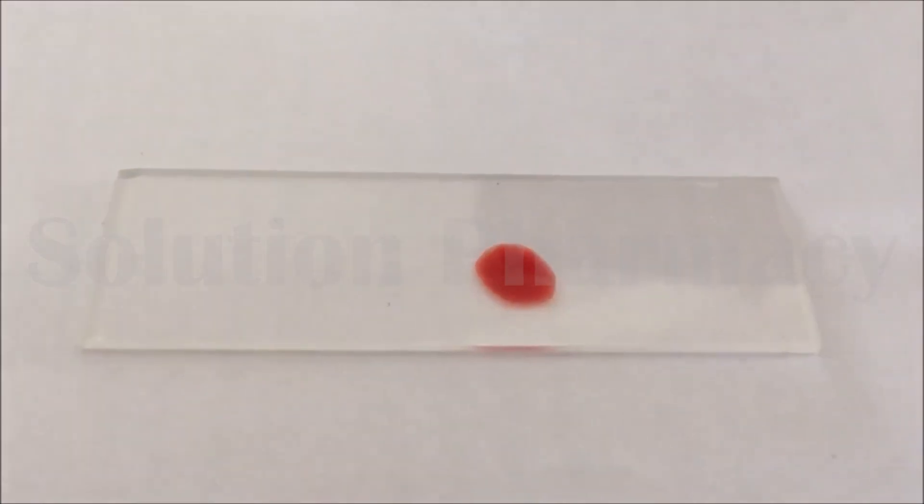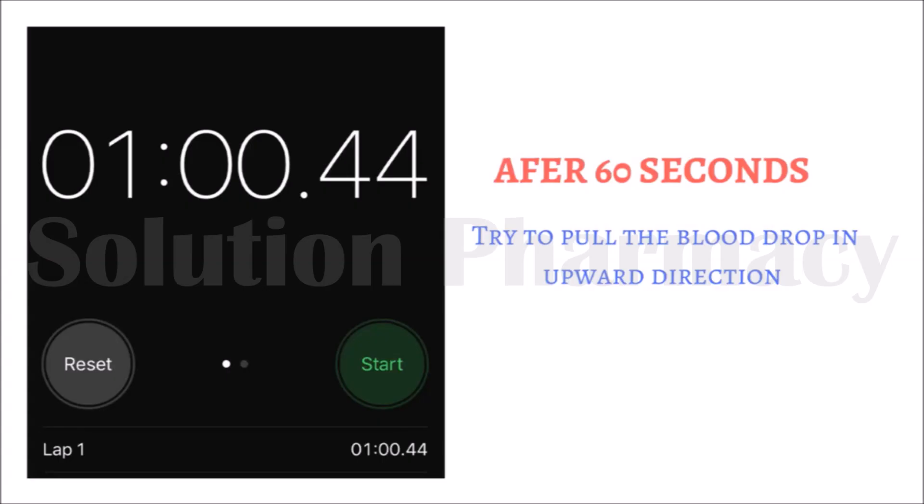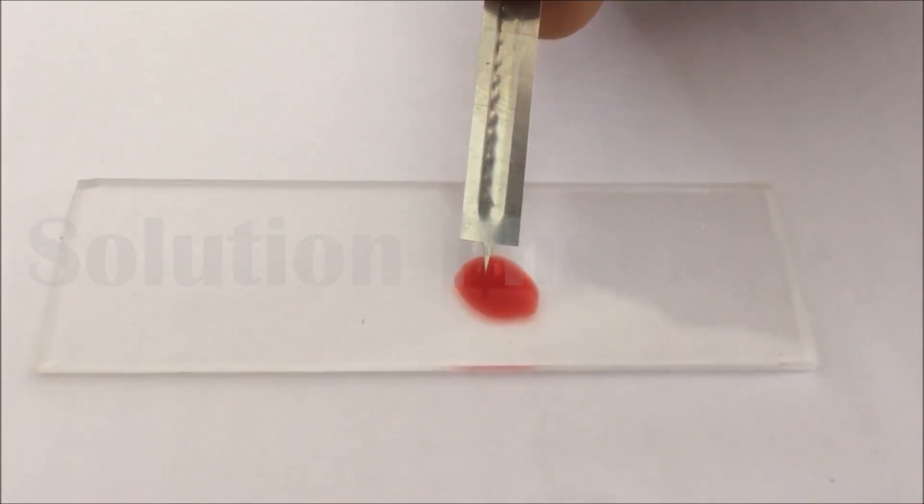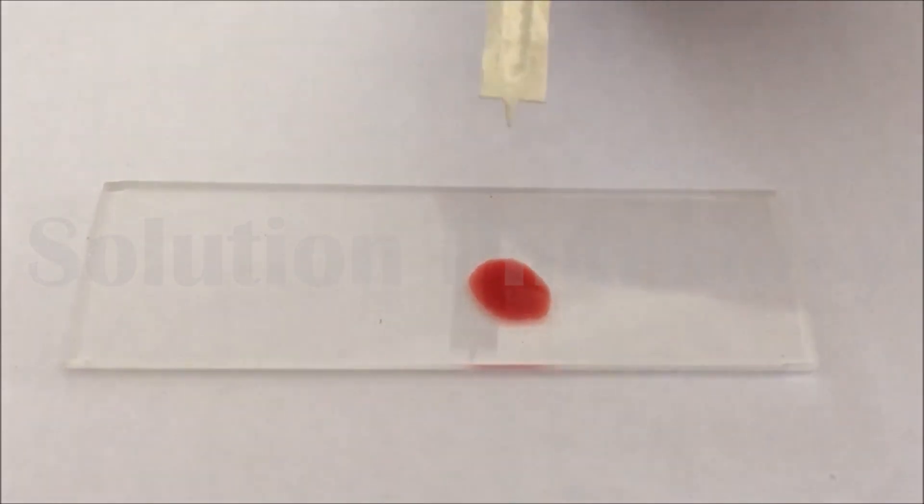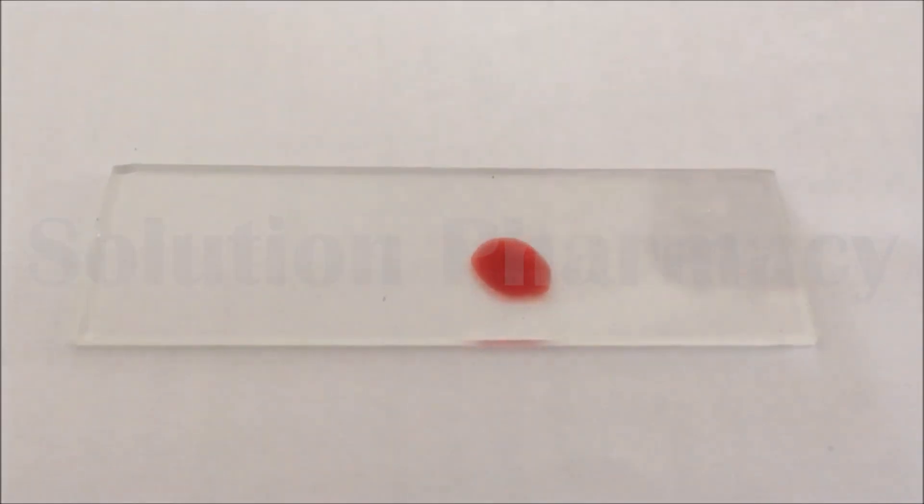Again after 60 seconds, repeat the same process. Pull the blood with the tip of lancet or syringe. After 60 seconds you can see there is no clot formation of the blood. Insoluble fibrin, which is thread-like structure, is not formed here.